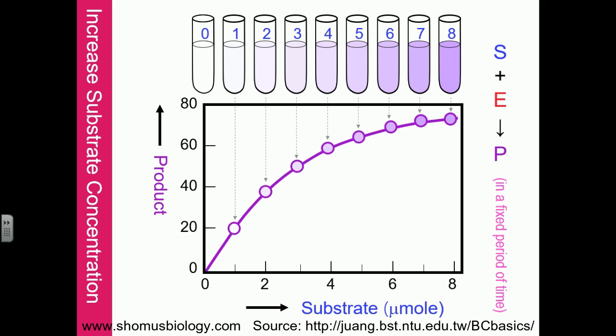But when the substrate concentration is too high, the enzyme activity is no longer rising. The curve shows a saturation point where the graph becomes linearized after a certain substrate concentration. This is the true behavior of how the enzyme-substrate complex works and how enzymes convert substrates into products.